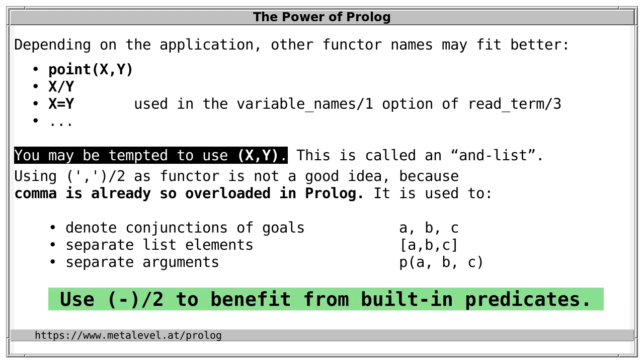Of course, one important motivation for using dash is that we benefit from the mentioned built-in predicates for pairs, such as keysort, pairs_keys_values, and so on. So in case of doubt, dash is certainly a good choice. And to repeat, only dash denotes pairs in the sense of the ISO standard.